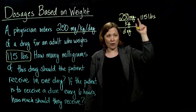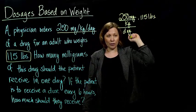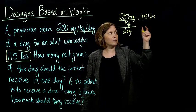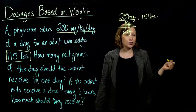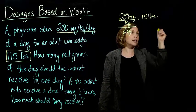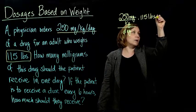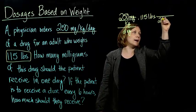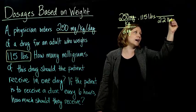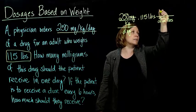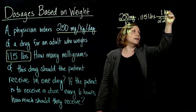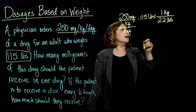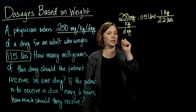I know how to convert pounds to kilograms. We know that there are 2.2 pounds per kilogram, and I want the pounds to cancel. So I'm going to multiply by a conversion factor of 2.2 pounds on the bottom and 1 kilogram on the top. My pounds cancel out.